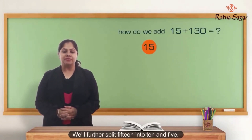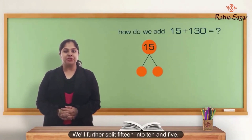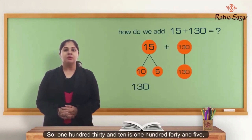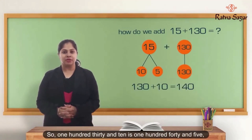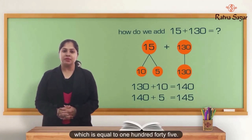We will further split 15 into 10 and 5. So, 130 plus 10 is 140, and then add 5, which is equal to 145.